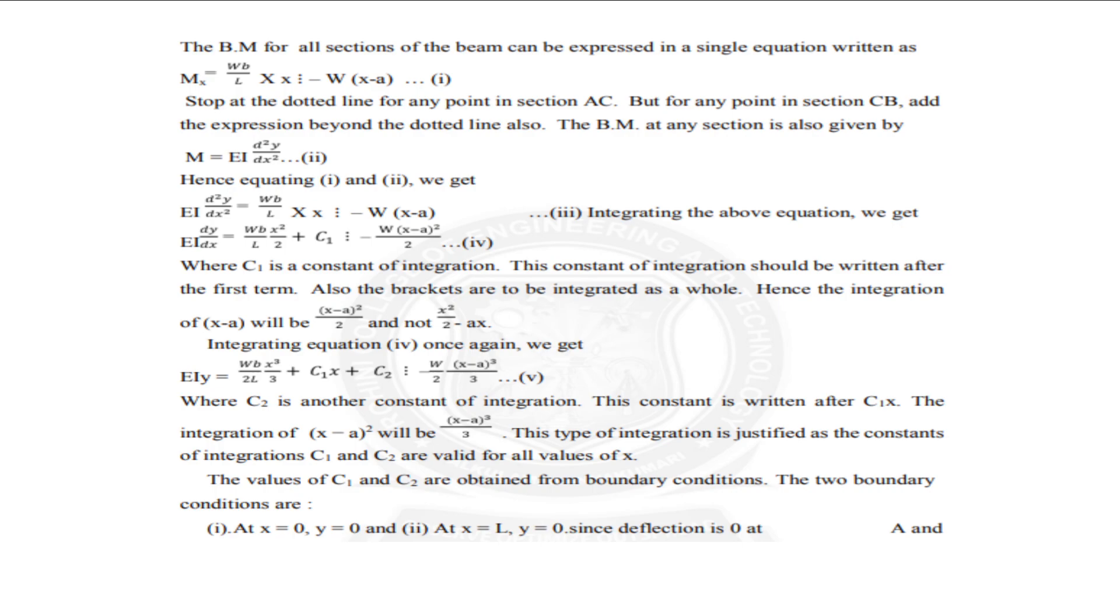And equation number 2 is M equals EI by D square Y by DX square. By substituting using these conditions we are getting the fourth equation EI by Dx equals WB by L into X square divided by 2 plus C1 constant minus W X minus A the square divided by 2. When we are integrating the equation 4 once again we are getting EI into Y that is deflection is equal to we are getting the condition C2 and C1 that is equation 5.